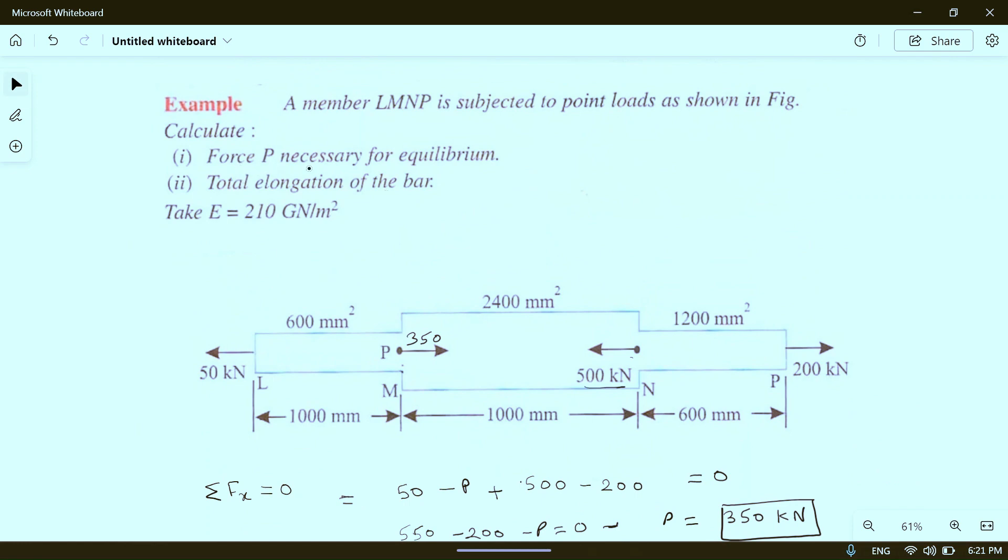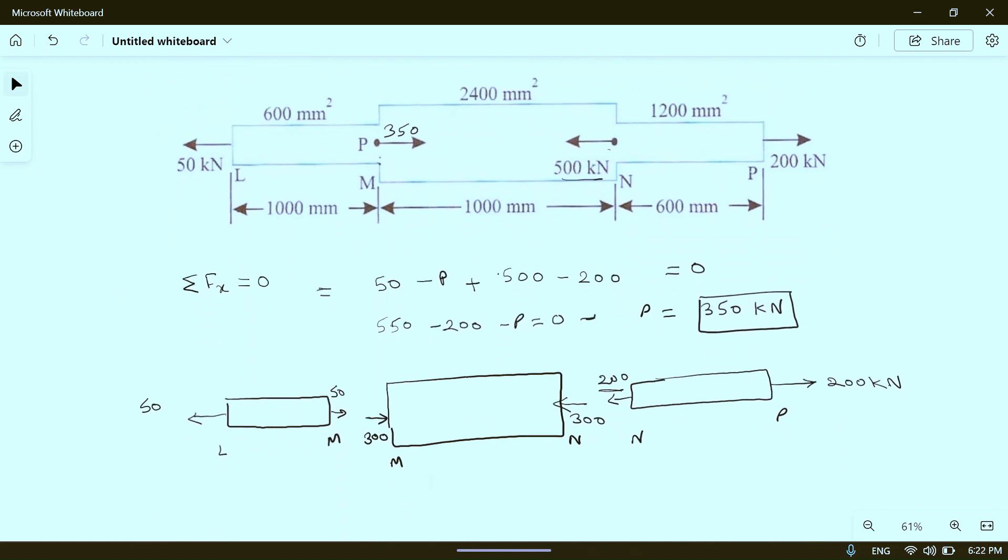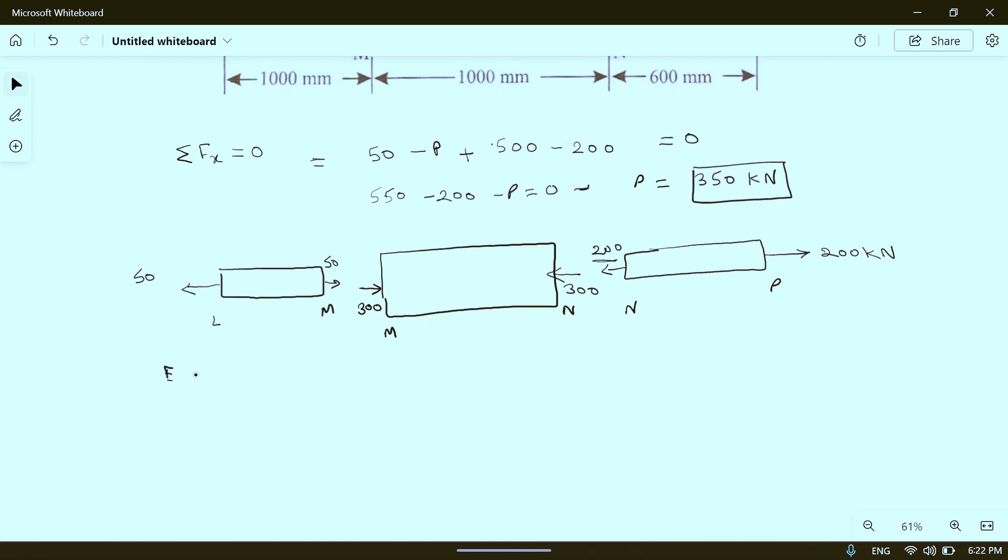Now we have to calculate total elongation of the bar. Force P we already calculated. E is 210 gigapascals. Elongation is delta L equals delta L1 plus delta L2 plus delta L3. This one is having compressive force, so its length will contract, not elongate. So it becomes delta L1 minus delta L2 plus delta L3.